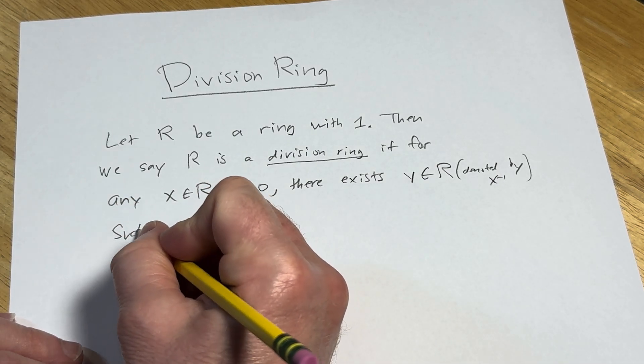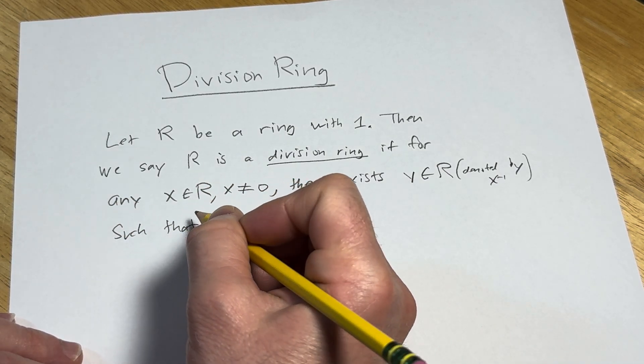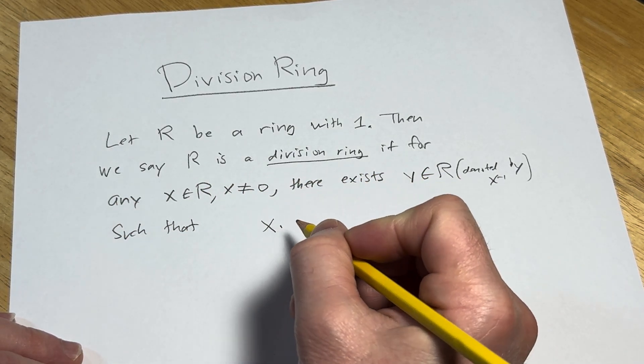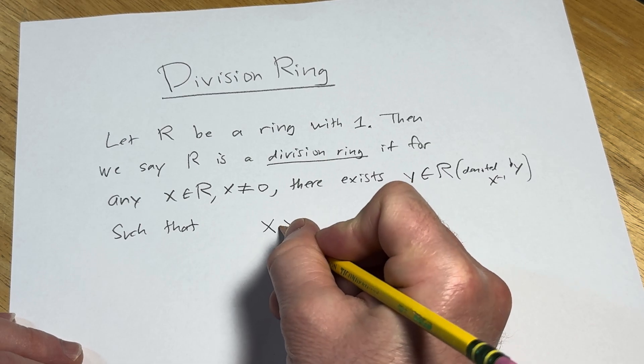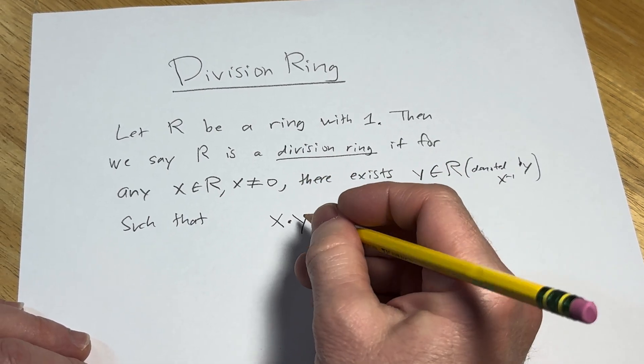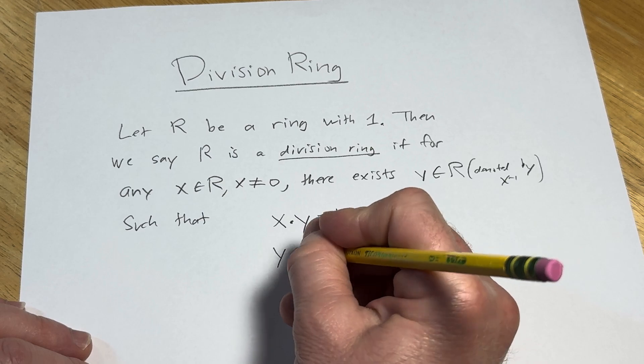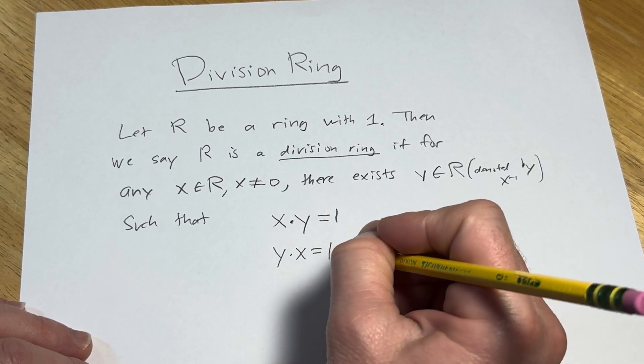such that when you take x and multiply it by y, you get 1 on the right, and if you multiply it by y on the left, you also get 1.